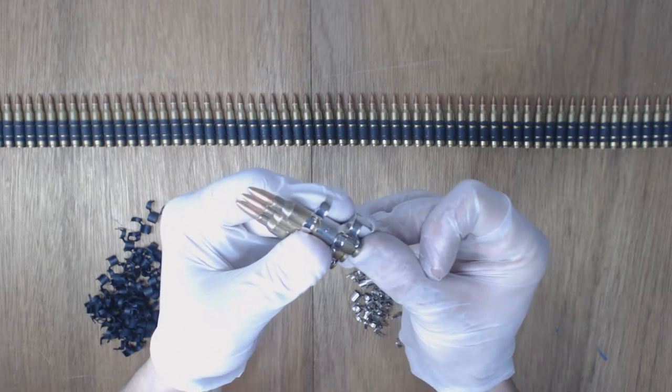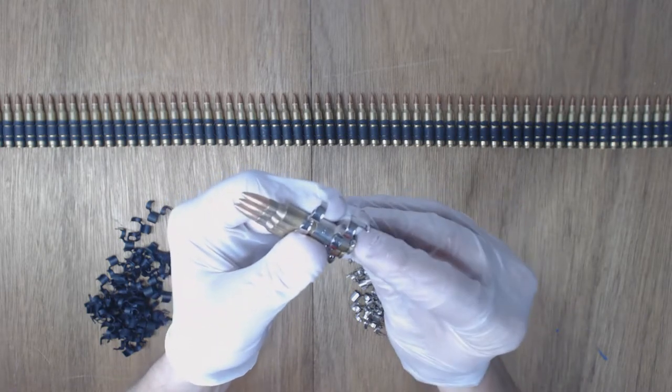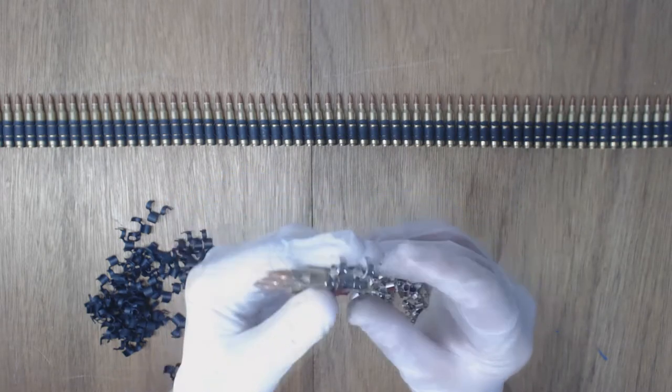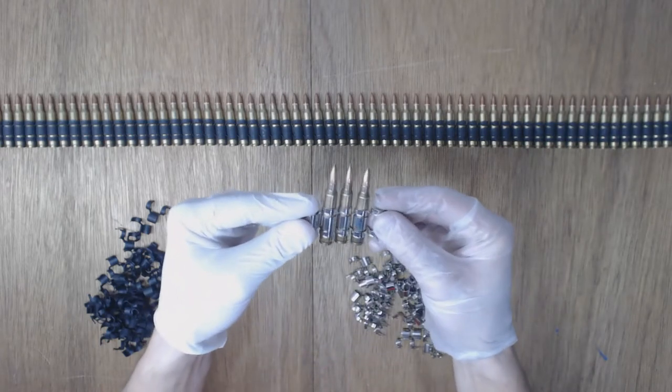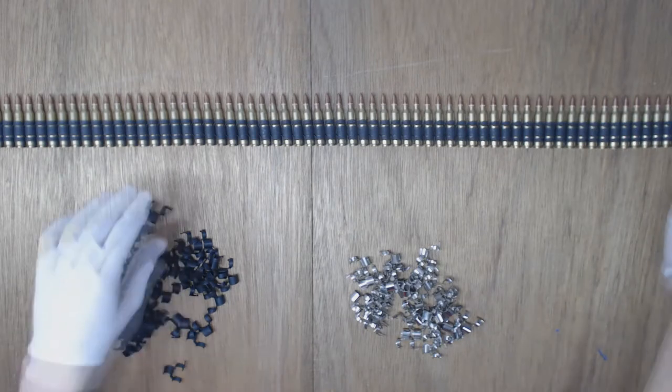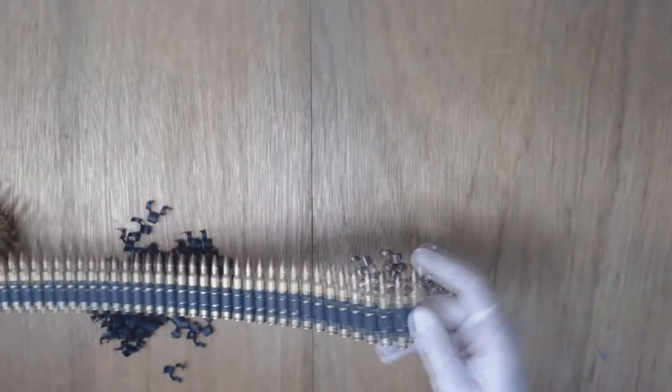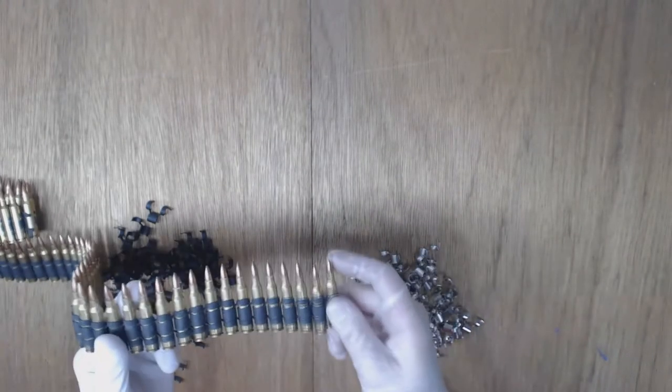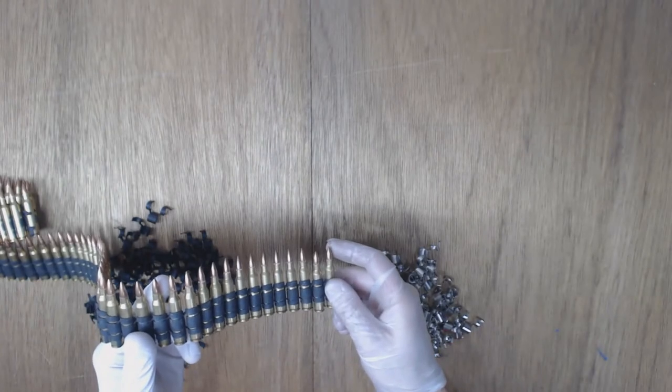That little piece of metal holds the round in right when it clicks in. Also remember when loading, always have the brass on the ground and the weak side up.